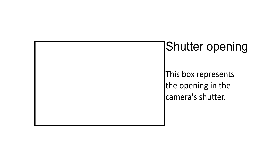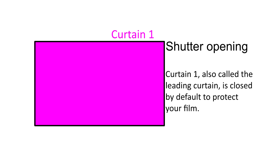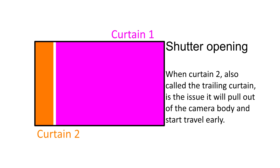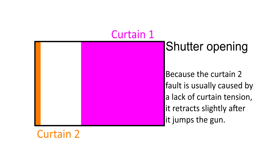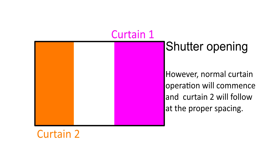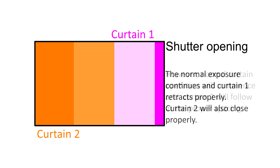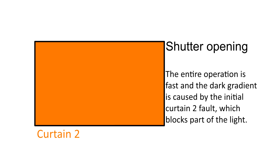One way that shutter capping can occur is if the leading and trailing curtains both open at the same time, and then the leading curtain takes off, or if the leading curtain pulls the trailing curtain out with it. That leads to the trailing curtain blocking part of the image from receiving light, which would typically happen at the leading edge of the frame. The trailing curtain is likely to pull back in a little bit, leading to a dark gradient. That's one cause, which is a shutter mistiming or action problem.